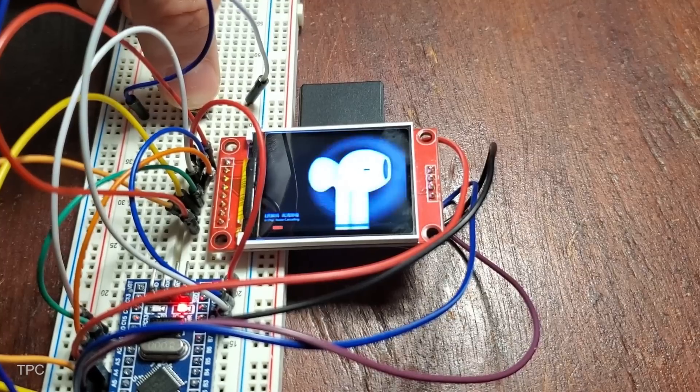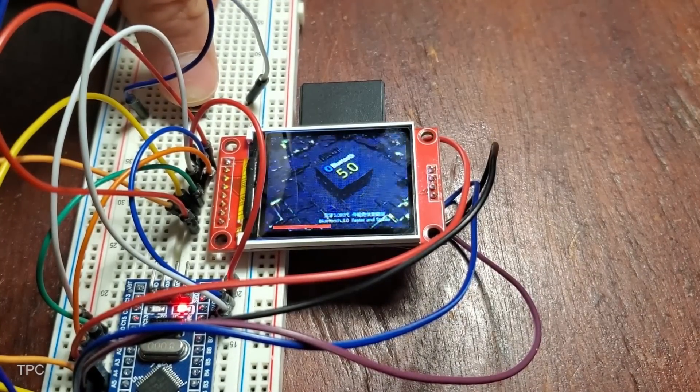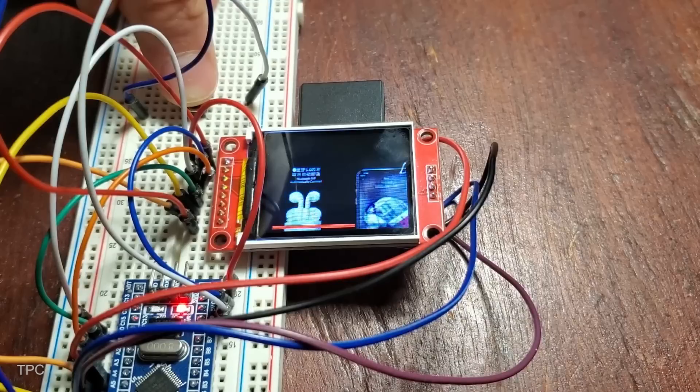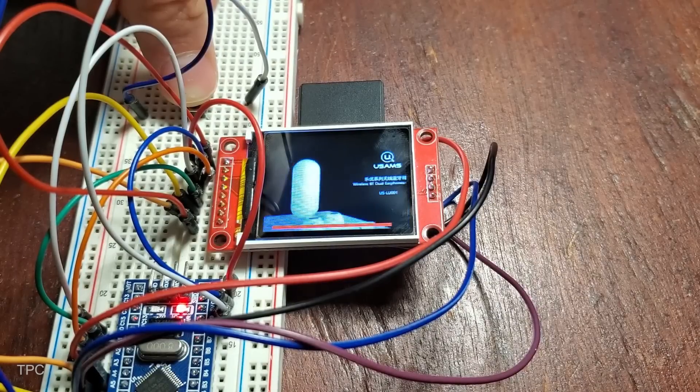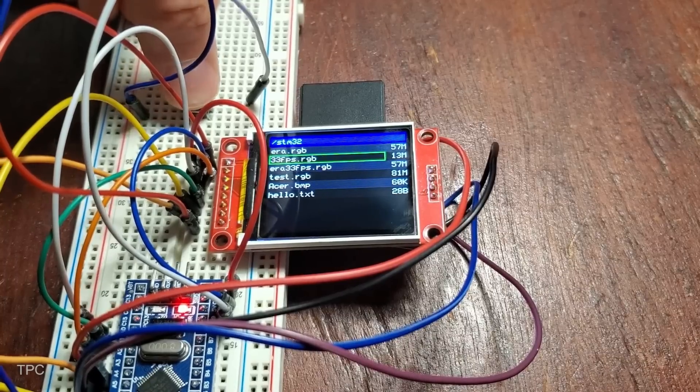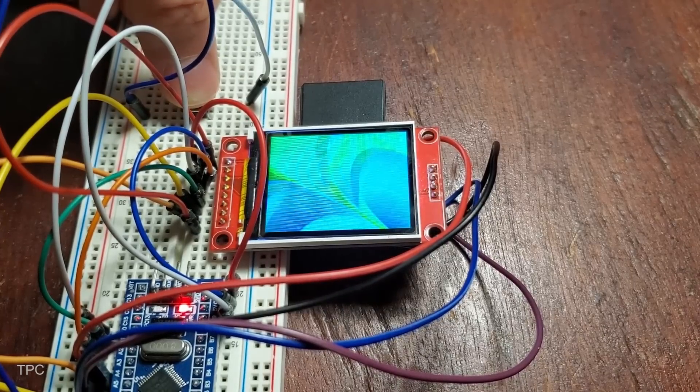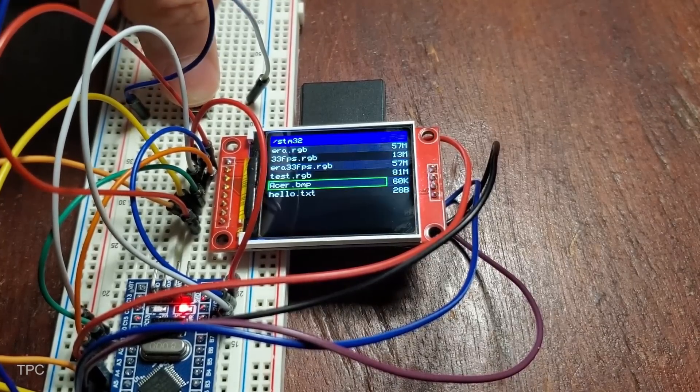The process starts with preparing the images or videos. The images need to be resized to 160 by 128 pixels and saved in BMP format using any simple photo editing software. The video is also resized, reformatted, and saved as raw pixel data, making it readable by the microcontroller.